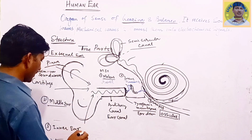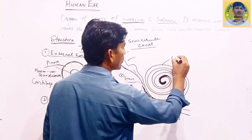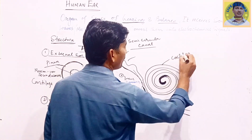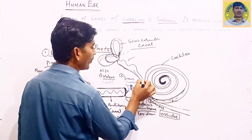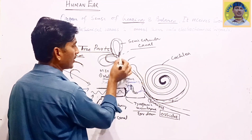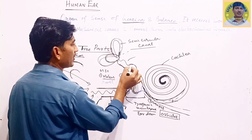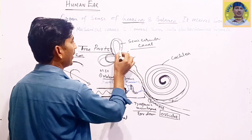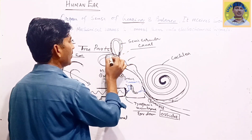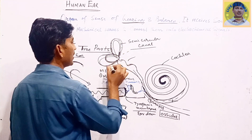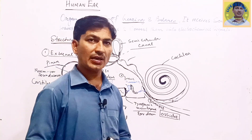After the middle ear there are structures which are part of the inner ear. The inner ear consists of a coil-like structure called the cochlea. On the other side of the cochlea there are some fluid-filled structures.